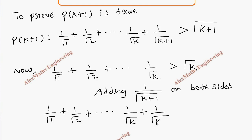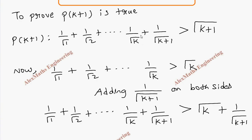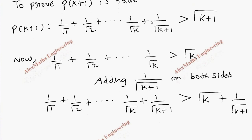By adding 1/√(k+1) to both sides of P(k), we get the full LHS of P(k+1). Now only thing we have to prove is that this sum is greater than √(k+1). We keep the LHS as it is: 1/√1 + 1/√2 + ... + 1/√k + 1/√(k+1).